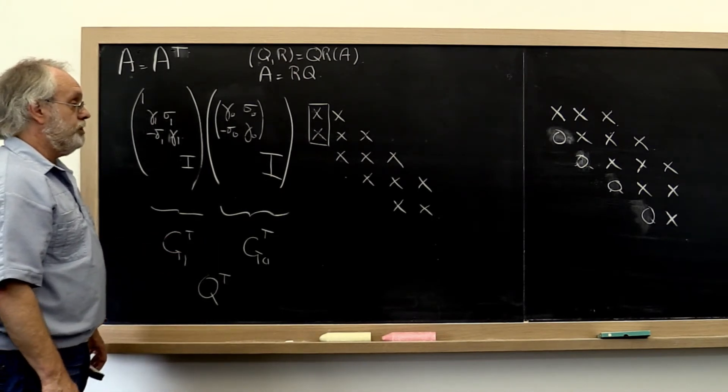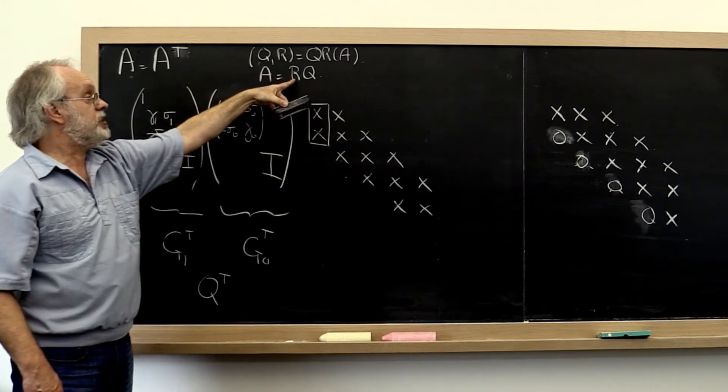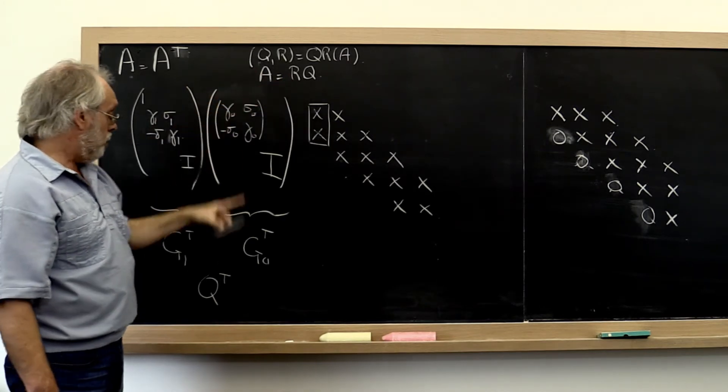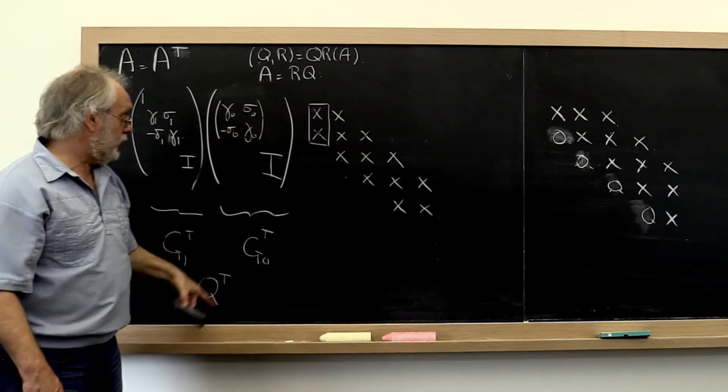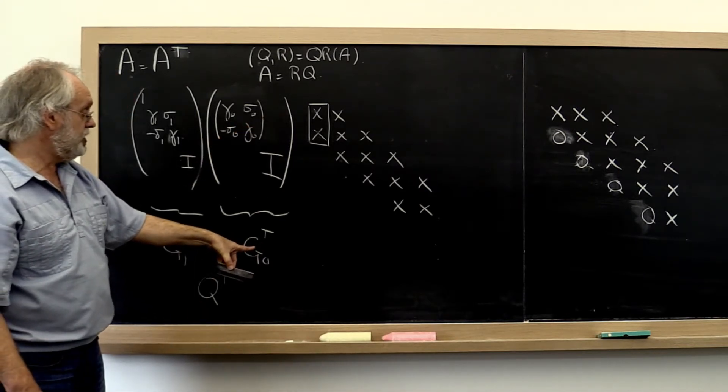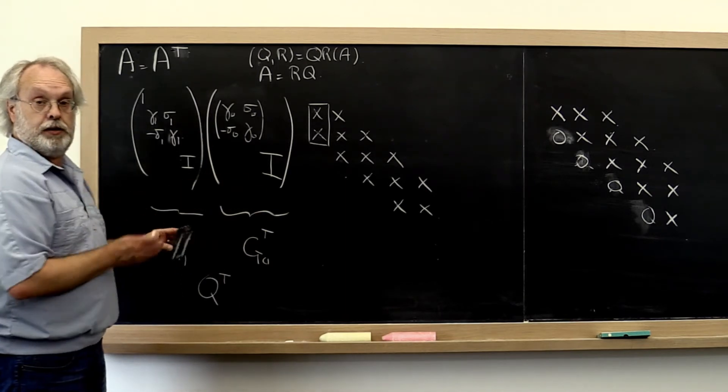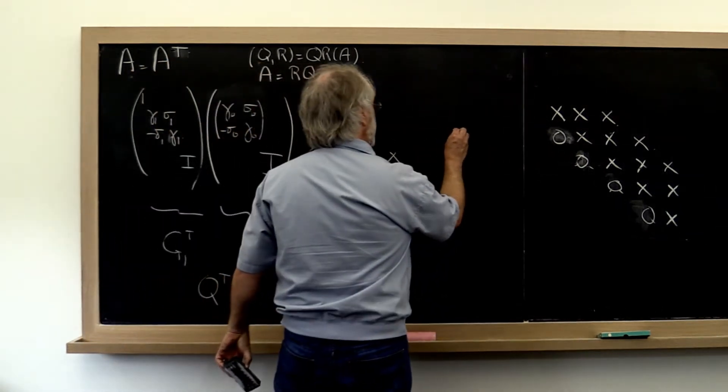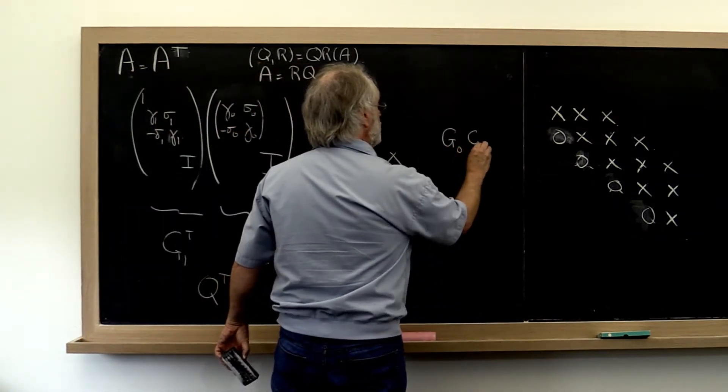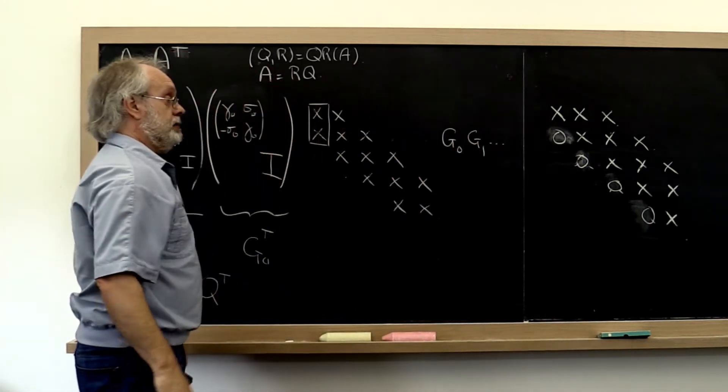Okay? Now what's the next step? The next step is to take our resulting R and to apply Q to that. Now applying Q to that means applying G0 first and then G1 and then G2, et cetera, from the right. So what we now want to do is we want to take G0, G1, etc. and apply those from the right.